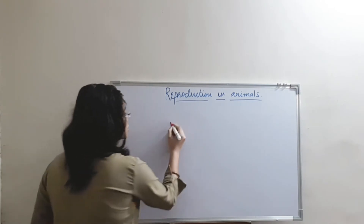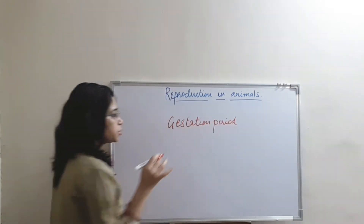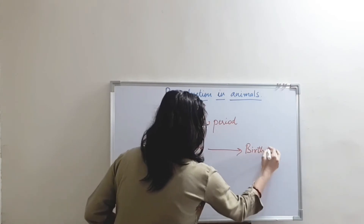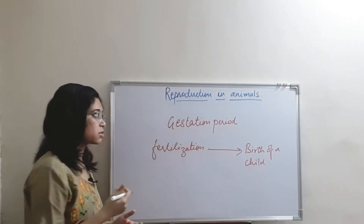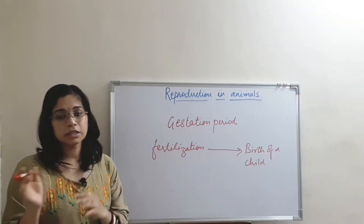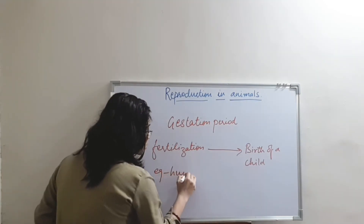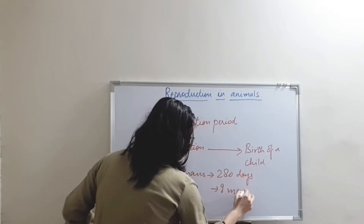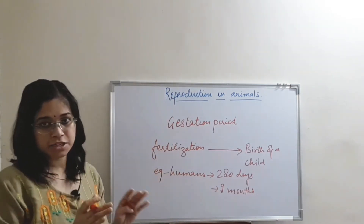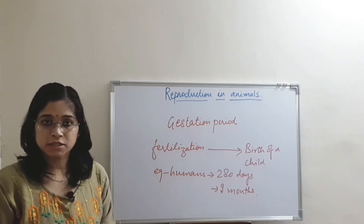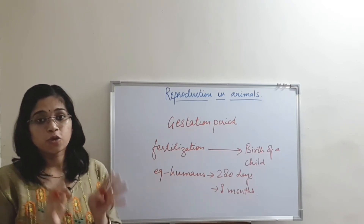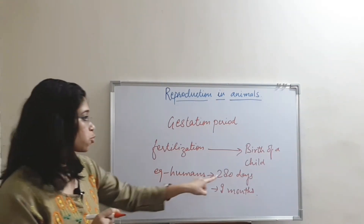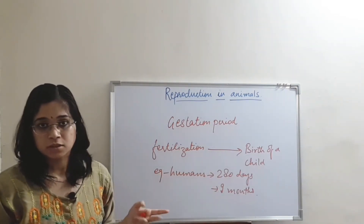The time period between fertilization and birth of a child is known as the gestation period. This is different in different species. In humans, it is 280 days, but approximately we take it as nine months. If you get a question in your examination about the exact gestation period in humans with both 280 days and 270 days as options, you should choose 280 days. If 280 days is not present, then you can choose nine months.